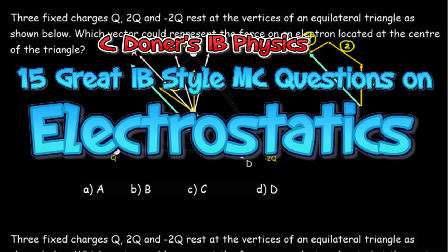Okay, let's do 15 great IB style multiple choice questions on topic 5.1, which is basically electrostatics. The questions are chosen either because of their commonality as themes for IB questions or because of their instructional value.